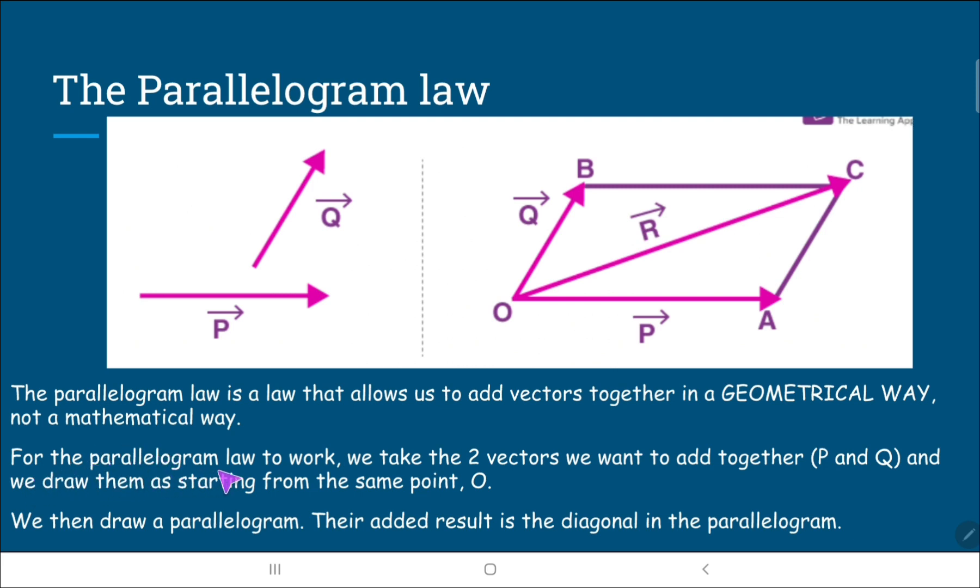For the parallelogram law to work, we take the two vectors. So let's say we have P and Q. We draw them as if they're starting from the same point O. So you kind of merge them together so that they start from this origin. And then we draw a parallelogram with these two guys. And after you draw the parallelogram, you can find their resultant by measuring the diagonal of that parallelogram.